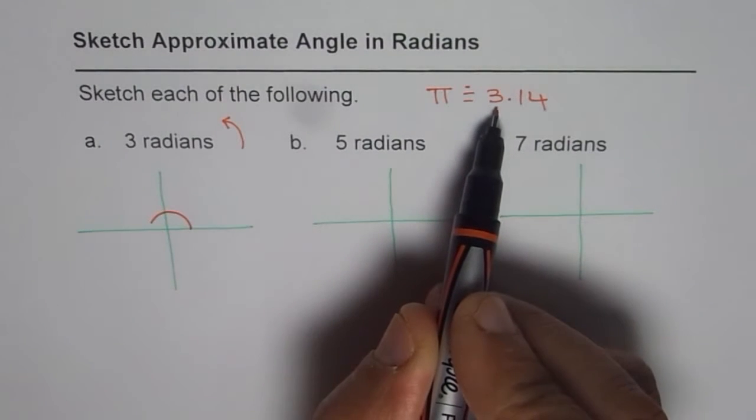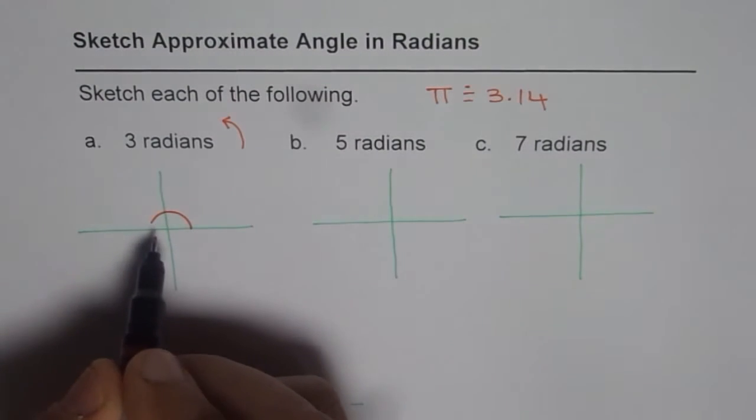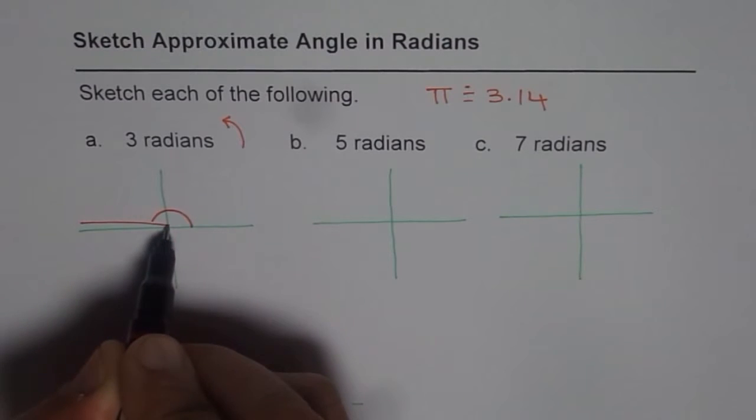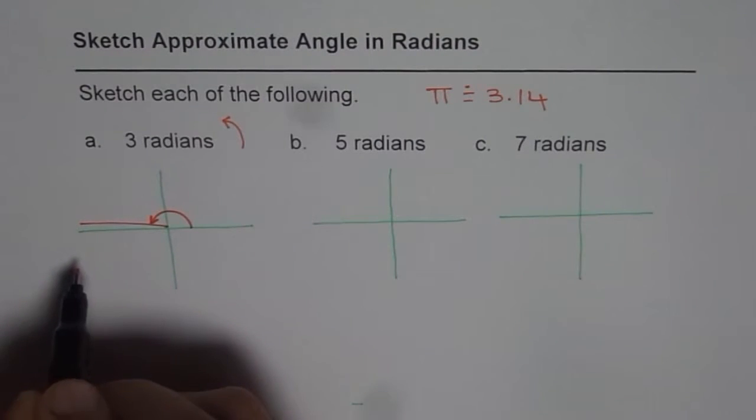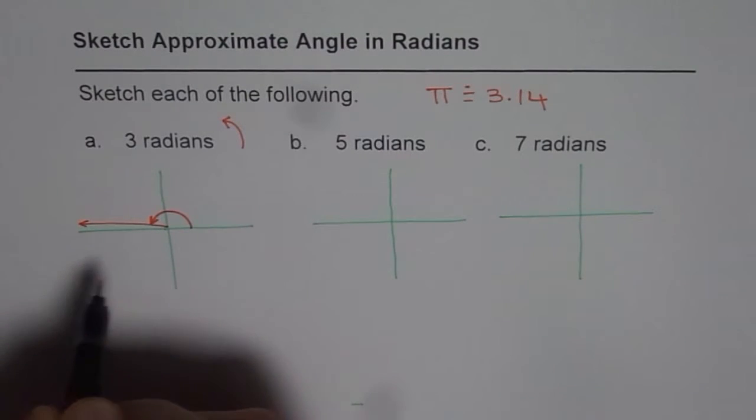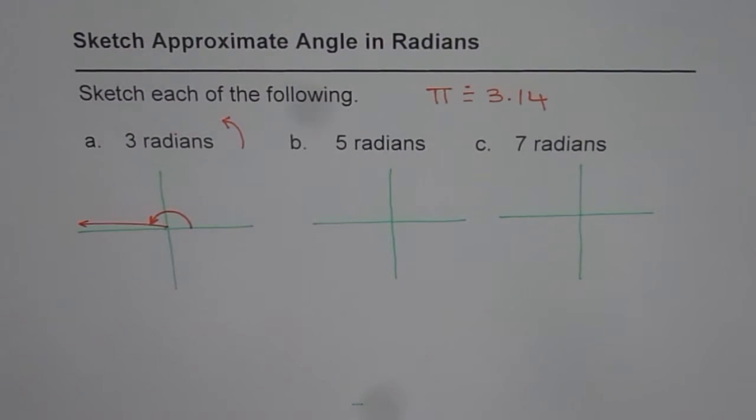So that means it is almost 180 degrees right. A linear line you should get but it is kind of less. So it will be this much. Do you see that? So this angle, it should be a straight line from the origin represents 3 radians.